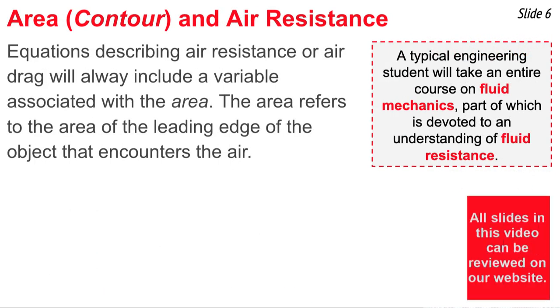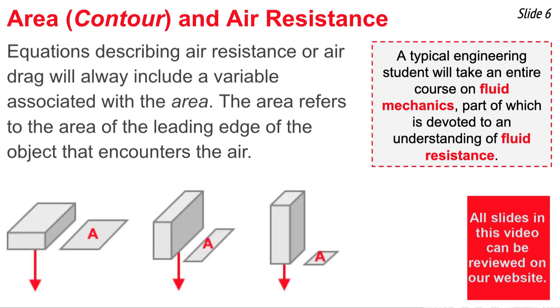The third variable is a bit more complicated than the previous two. We'll call it the area, or contour, of the object. A typical engineering student will take a course on fluid mechanics, and a part of that course is devoted to understanding fluid resistance forces, like air resistance. So if it takes an entire course to understand this, obviously there's some complications.